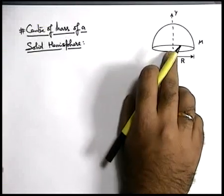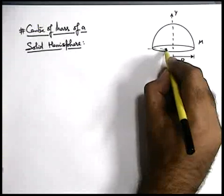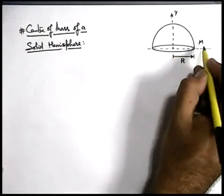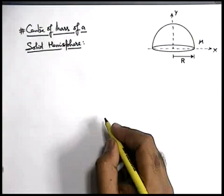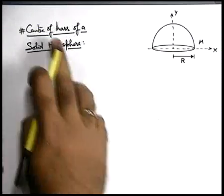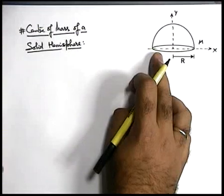passing through the center of this hemisphere, which is also normal to the base. The diametrical line passing through the base we consider as the X-axis for calculation. Again, to find center of mass for a continuous object, we need to consider an element.